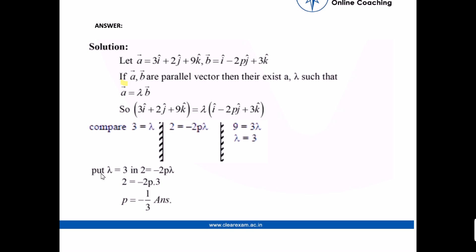We put lambda is equal to 3 in this equation we get 2 equals minus 2p times 3. After solving this equation we get p is equal to minus 1 by 3. So the value for which these two vectors are parallel of p is equal to minus 1 by 3. Thank you.